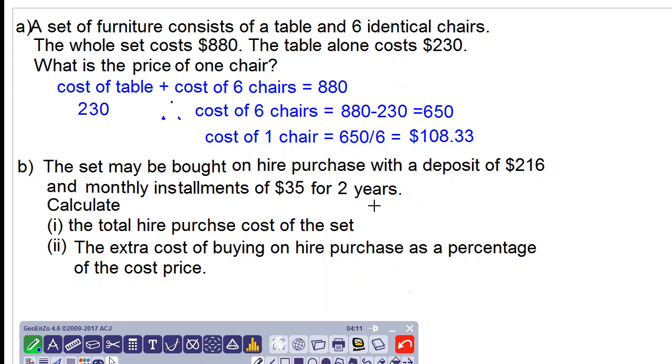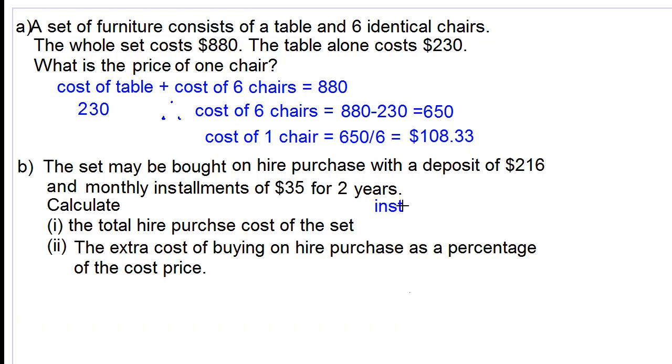So let's calculate the amount of installments. It should be $35 for two years, so 35 multiplied by 24 because there are 24 months in two years.